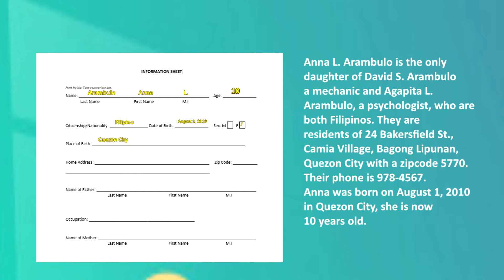For the home address, let us write where Ana lives: 24 Bakersfield Street, Camya Village, Bagong Lipunan, Quezon City. And let us now indicate the zip code on the form — it is 5770. Let us now proceed to the name of the father. Ana's father's name is David S. Arambolo. And now let's go to the occupation of Ana's father — it says in the paragraph that Mr. David S. Arambolo's occupation is a mechanic. Now let's go to Ana's mother's name — Agapita L. Arambolo — and then let us put Ana's mother's occupation, which is a psychologist.